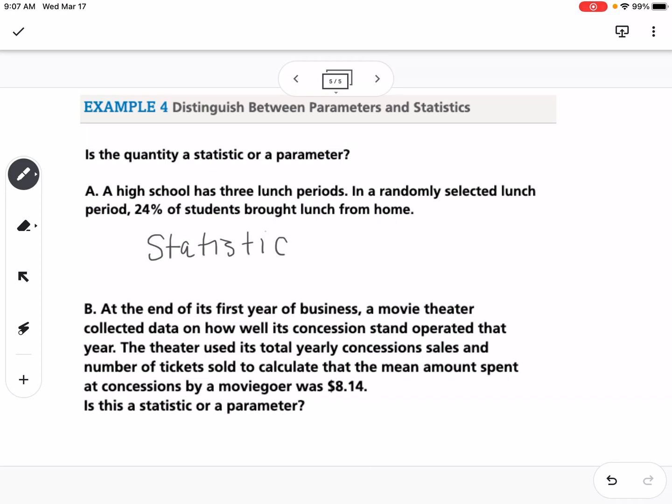Part B says at the end of the first year of business, a movie theater collected data on how well its concession stand operated that year. The theater used its total yearly concession sales and number of tickets sold to calculate that the mean amount spent at concessions by a moviegoer was $8.14. Since the theater included all moviegoers, they did not take a sample. They did all moviegoers and found an average amount per moviegoer. This would be considered a parameter.